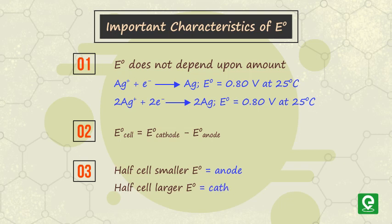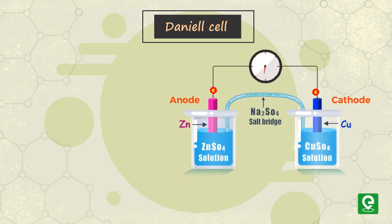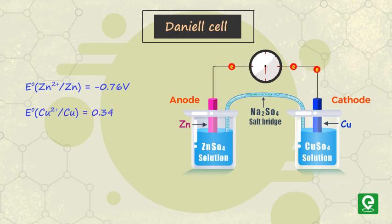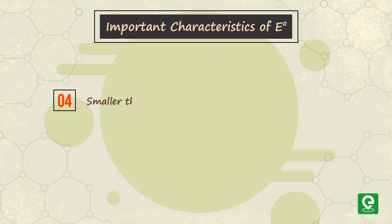For example, in a Daniel cell, E° for Zn²⁺/Zn is equal to -0.76 volt and E° for Cu²⁺/Cu is equal to 0.34 volt. Therefore, we know that the zinc electrode will act as anode and the copper electrode as cathode, and E° cell is equal to E° cathode minus E° anode, which is equal to 1.10 volt.